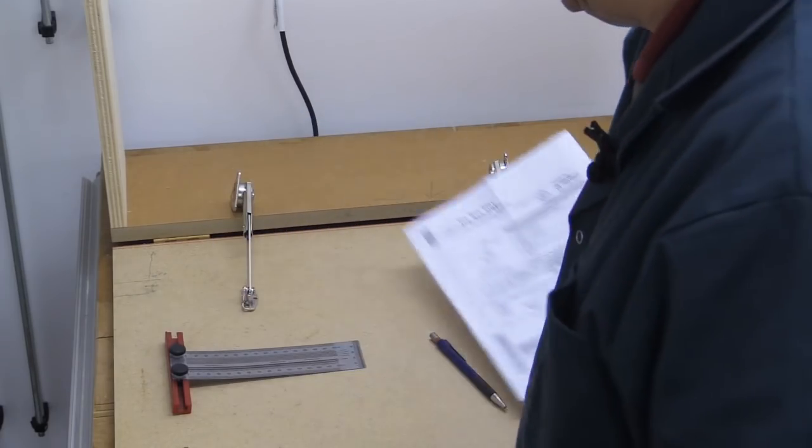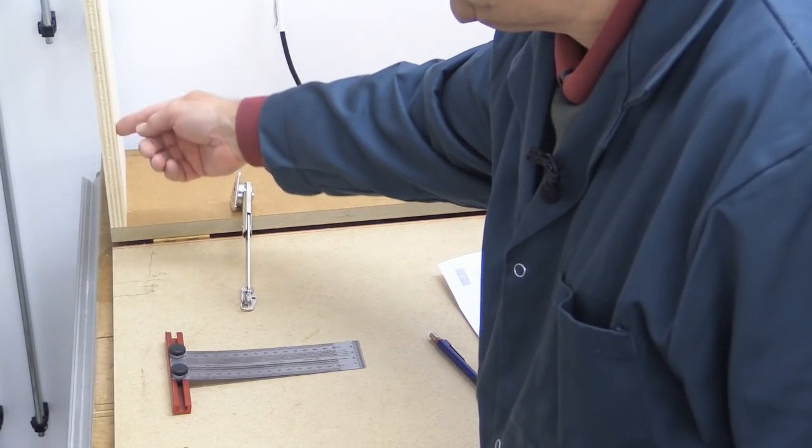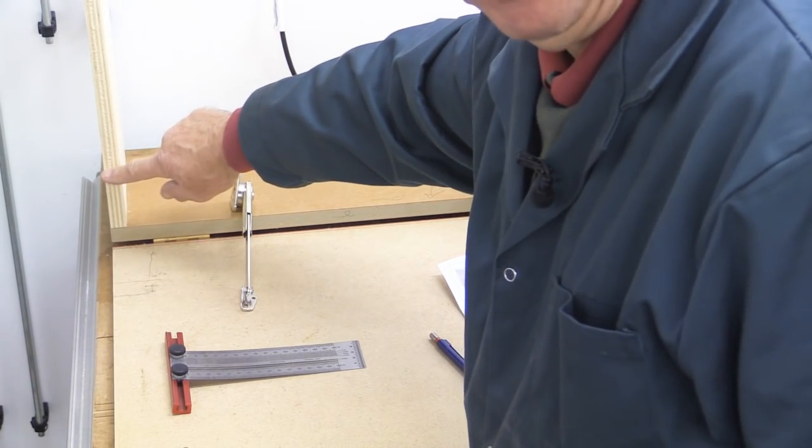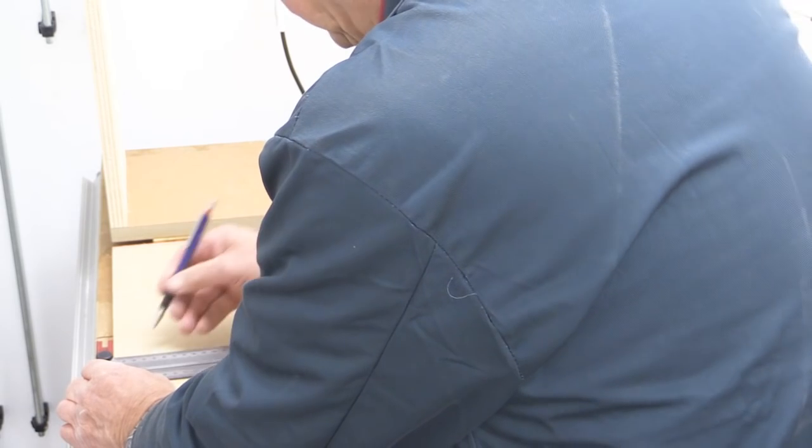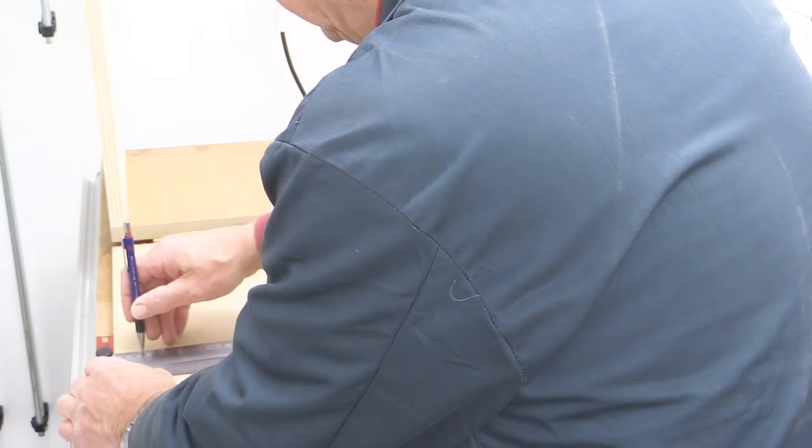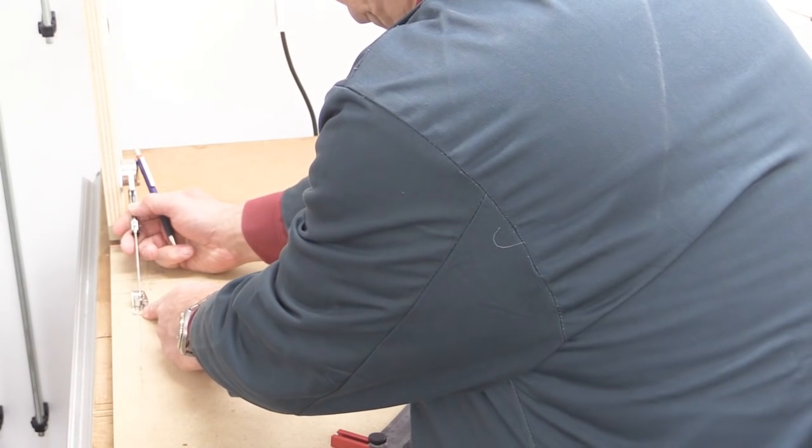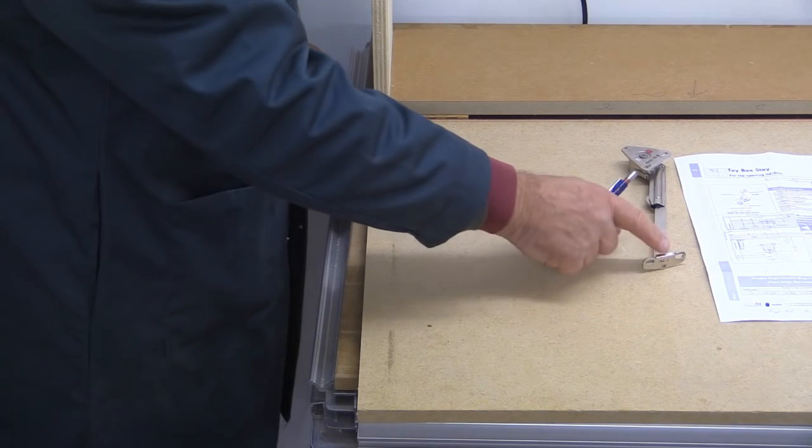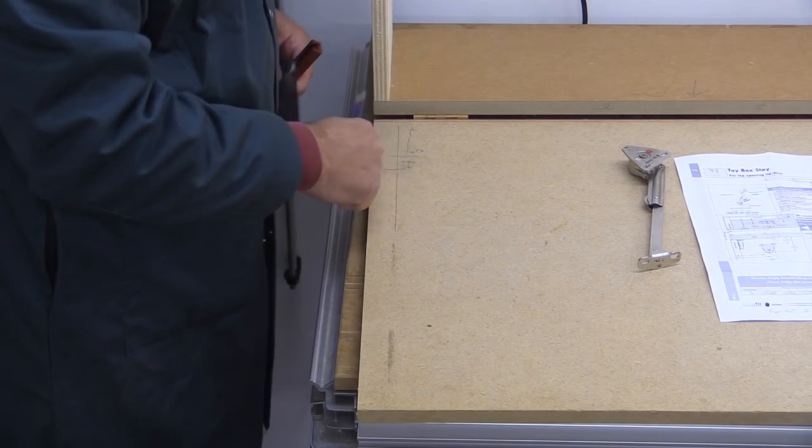Now for the top part of the stay, the distance from this inside edge is 11 millimetres. Well, I know my material in this case is 18. So 11 plus 18 is 29. So I'm going to mark a line along here, 29 from that edge. And that will be the centre line for the screw holes here. Now, according to my interpolated figures, the centre for this piece should be 109 from the centre of the hinge. And I've marked that line already.